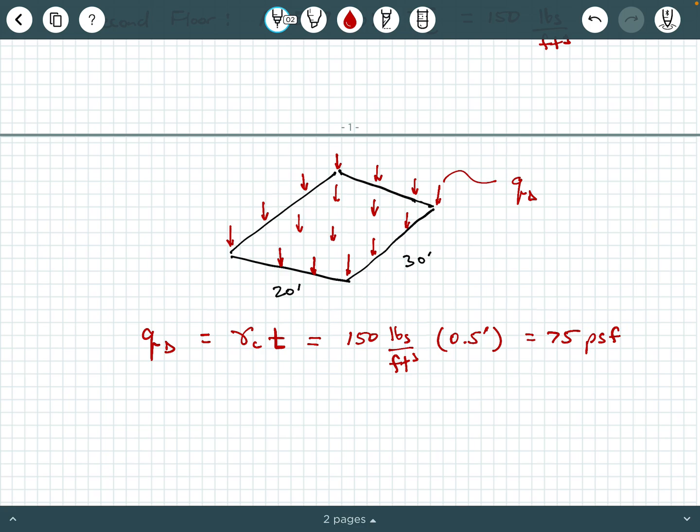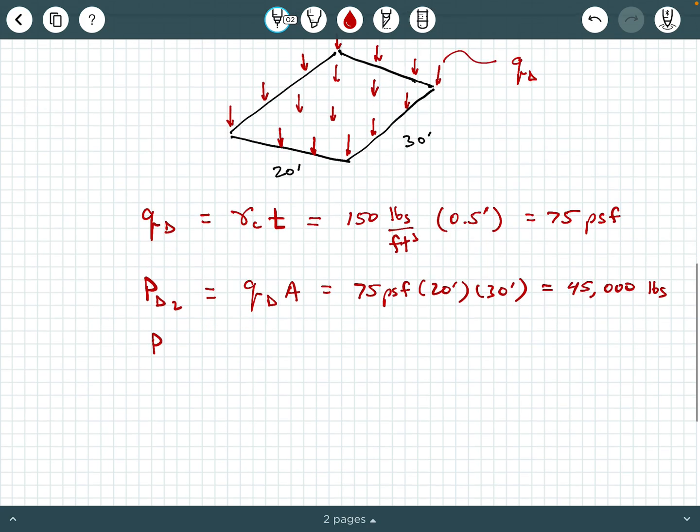Now, if we want to take it to a point load in kips, like the problem said, then the dead load, I'm going to put a little two here for the second floor, that's going to be Q dead times the area over which it's acting, so that's 75 PSF times 20 feet times 30 feet because that Q dead is acting over this 20 by 30 area, right? So I'm getting out my calculator here. I'm using a TI-36X Pro in case you're wondering. 75 times 20 times 30, that's 45,000 pounds. Now, the problem said, determine it in kips. So P dead 2 is going to be 45 kips. So that's part of our answer.